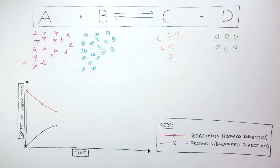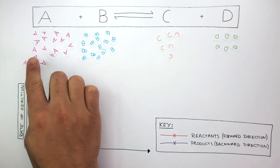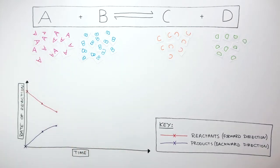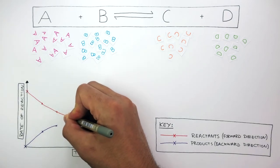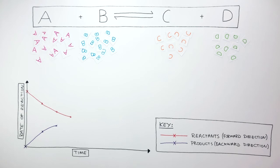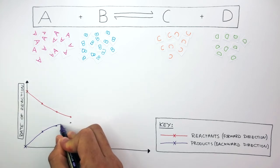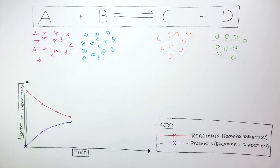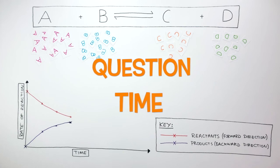As A and B continue to react, their concentration decreases, and as C and D continue to be formed, their concentration increases. Remember, whilst A and B are forming C and D in the forward direction, C and D are also forming A and B in the backward direction. On the graph, the rate of the forward reaction decreases as concentration decreases, and the rate of the backward reaction increases as concentration increases.